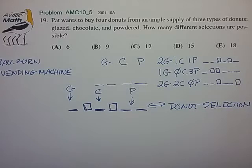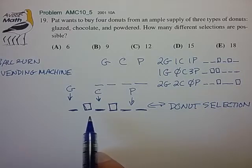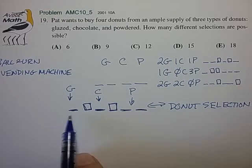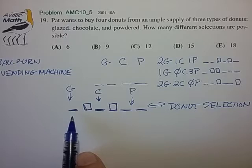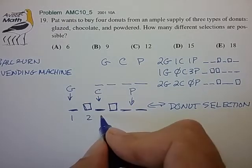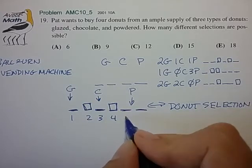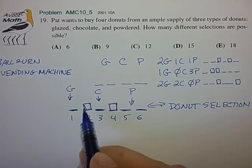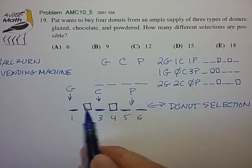Because now that we have this correspondence, we can basically look at this problem and see, well, how many patterns can we construct over here? And the problem over here seems a little simpler in that we essentially have six possible locations and two possible locations for the separator.